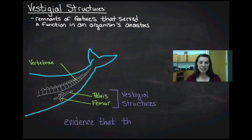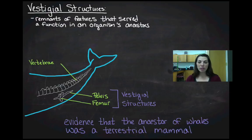That's evidence that the ancestor of whales was a terrestrial mammal. There are all sorts of vestigial structures. The easiest one to identify in us is our tailbone. Our tailbone is evidence that at some point an ancestor to humans had a tail, and that's seen throughout mammals.